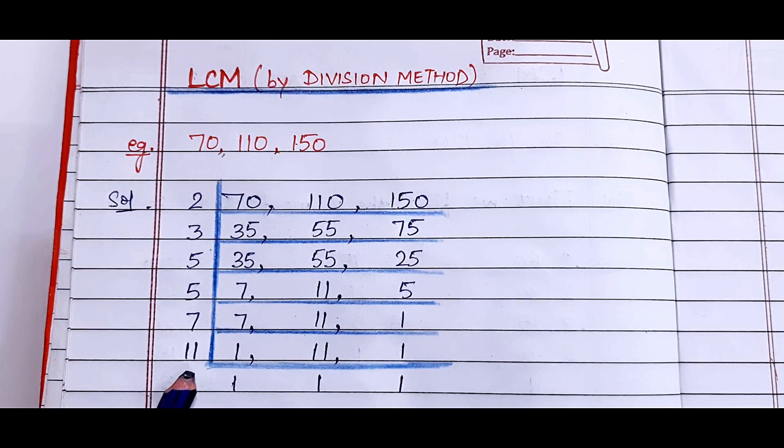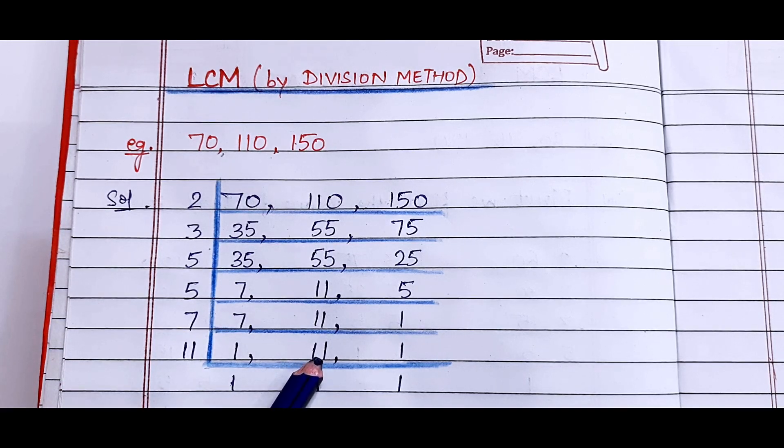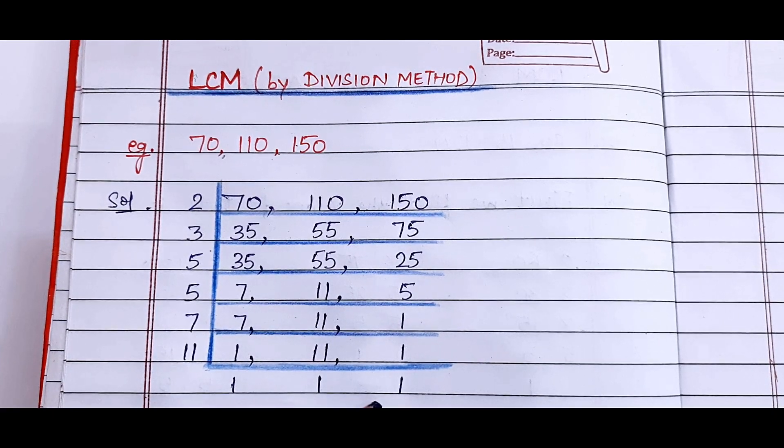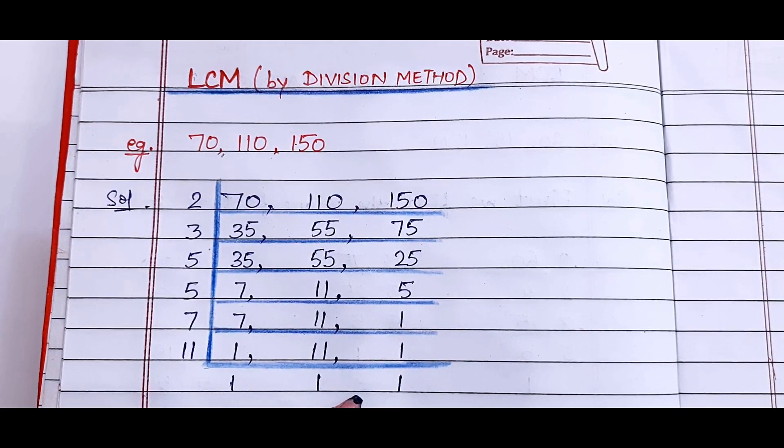Now the last number is 11. 11 times 1 is 11. Clear? And all these are already 1. These are already solved. Clear?